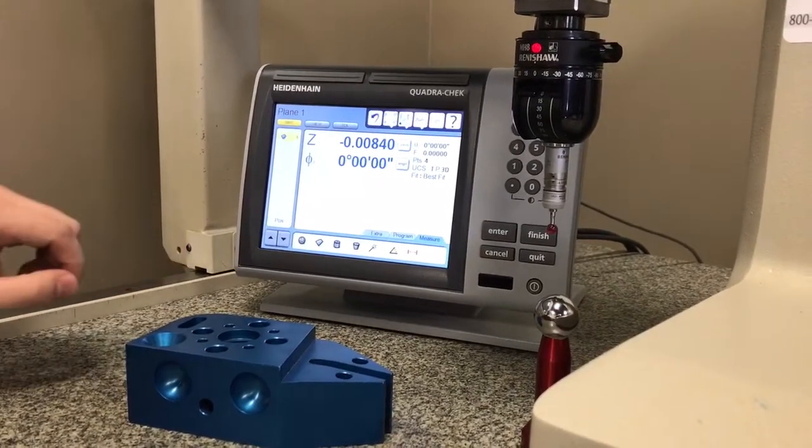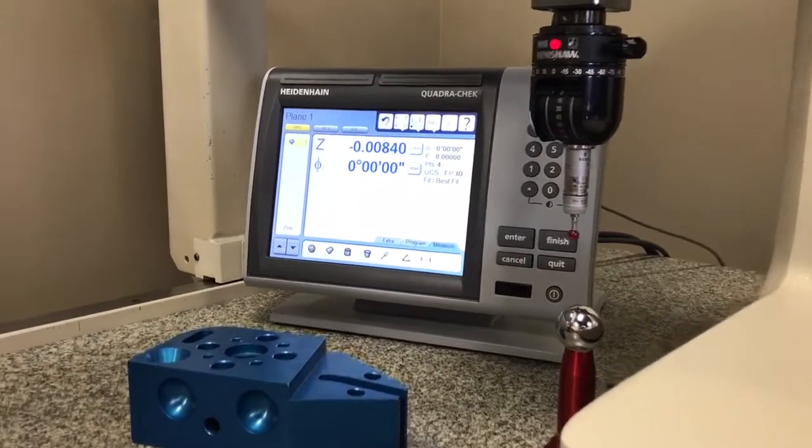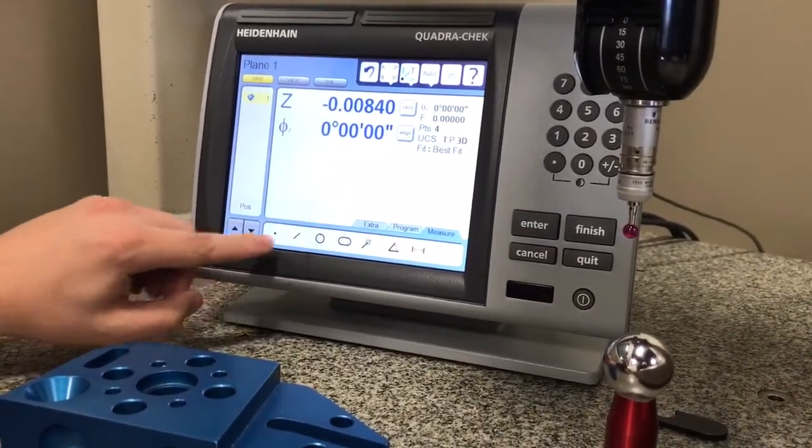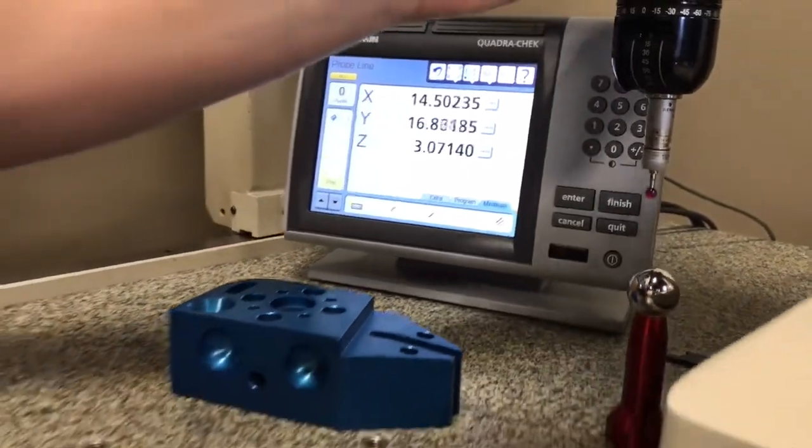Next I'm going to align the part in the x-axis. I'm going to go over here again on measure, select the line, and I'm going to measure a line on that front face.